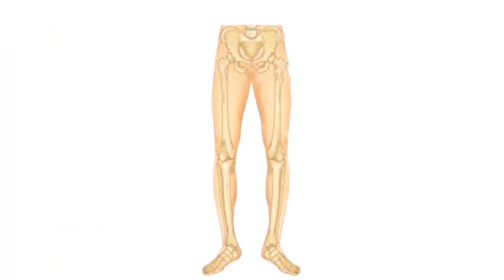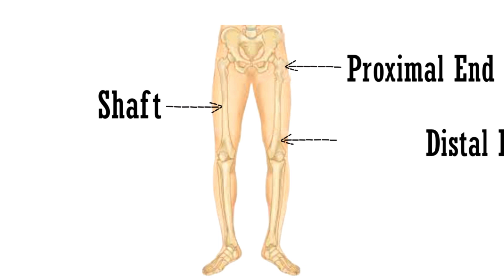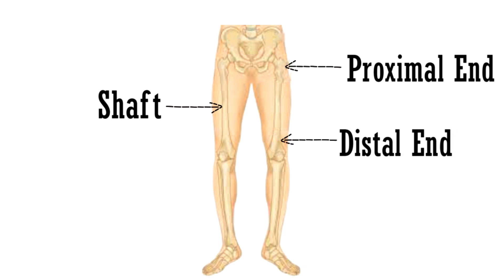Femur is divided into 3 parts: the proximal end, shaft, and the distal end. We will discuss each of these parts separately and see what anatomical features are present in each part.